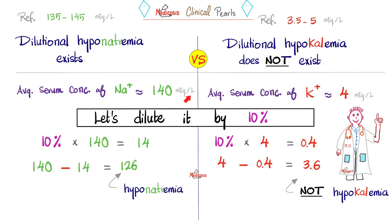Fair enough. What's the 10% of 140, please? It's about 14 milliequivalents per liter. How about that for potassium? Well, 10% times 4 is 0.4.